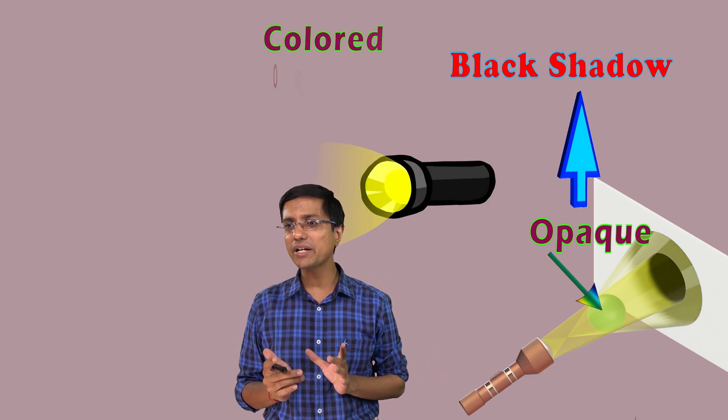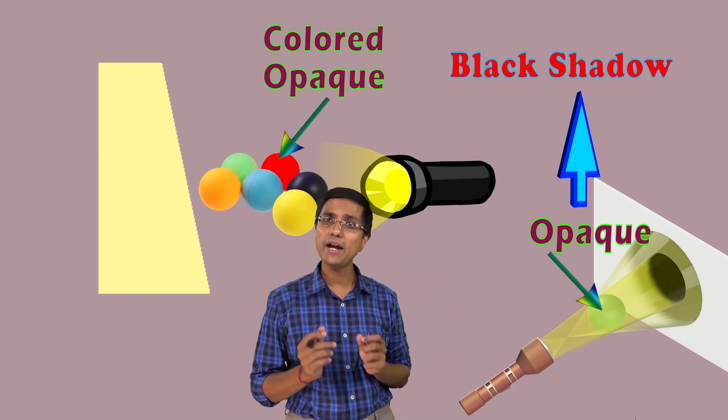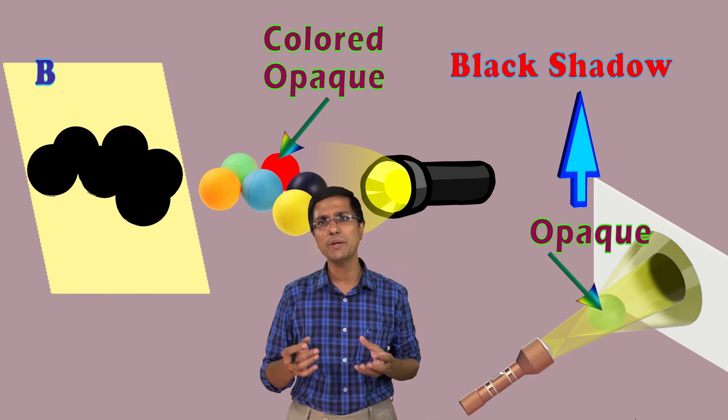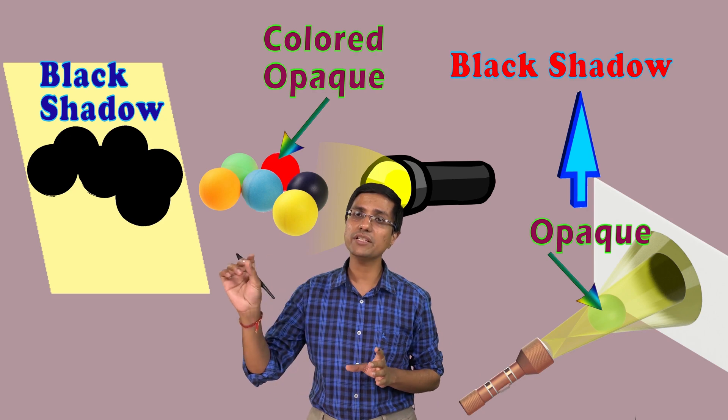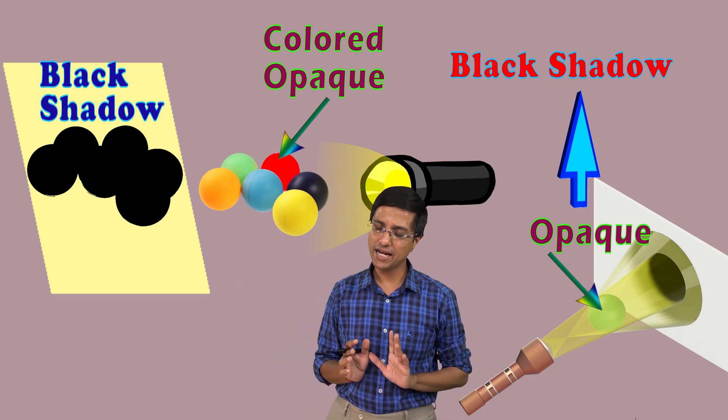Now the shadow is very interesting. You would see it behave in a very peculiar way. I can't imagine a person who would not have played by making various kinds of animals in the shadow. So you must have played with that too. The idea is the shadow of an opaque object is always black. That is the first property of a shadow. The second property of the shadow is no matter what the color of the object is, the shadow always is black. As long as the object is opaque, the shadow would be black.